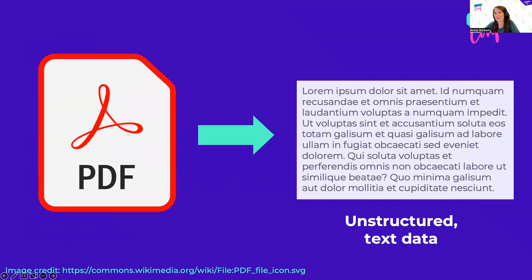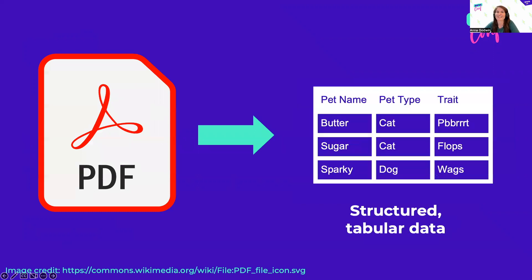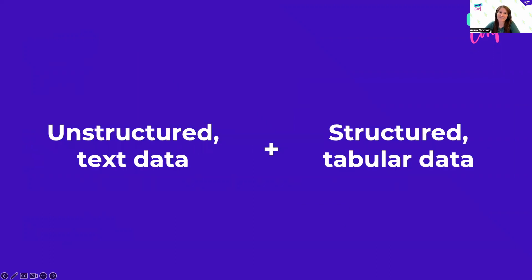We know that PDFs can be a rich source of text data, and they can be a source of structured data, too. Now that we're seeing unstructured and structured data sources, our minds can think of all the types of problems we can solve — entity recognition, topic modeling, clustering, social network analysis, modeling, data visualization, and the list goes on. But first, we need to get that data out of the PDFs so we can get to the applied machine learning part.